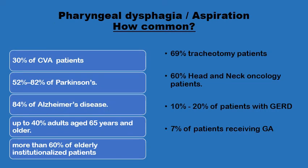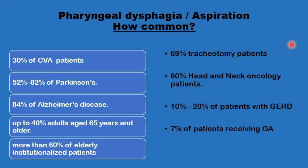When there are problems with normal pharyngeal swallowing, patients develop pharyngeal dysphagia and aspiration. This is quite common — pharyngeal swallowing is a very complicated and finely tuned process. In conditions like cerebrovascular accidents, Parkinson's, or Alzheimer's, pharyngeal dysphagia or aspiration is not uncommon. Even in elderly patients above the age of 65, whether in institutions or at home, the incidence is quite high. Problems also arise in tracheostomized patients, in head and neck oncology, in patients with gastroesophageal reflux, or immediately after a general anaesthetic.